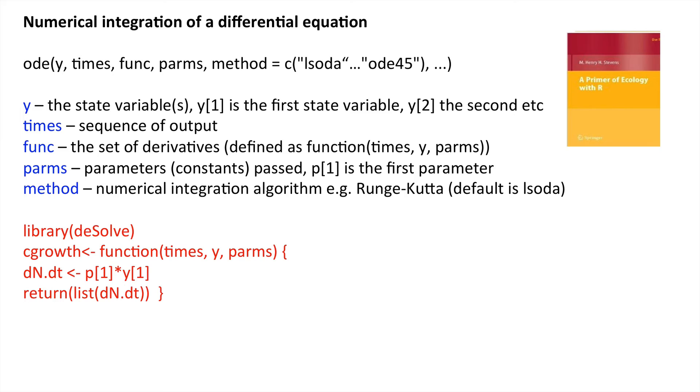And what we do here is that we return a list with this function the way it's been defined. And that is the list of values of dN.dt.